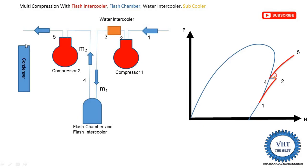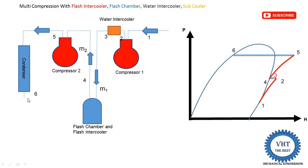The refrigerant is supplied into the condenser. The condenser is a heat exchanger where we reject heat to the atmosphere using a fan or water. The outlet point from the condenser is point 6. Since the condenser operates at constant pressure, it is isobaric heat rejection. At the inlet of the condenser it is vapor and at the outlet it is liquid, so we draw the horizontal line from point 5 towards the left to get point number 6.